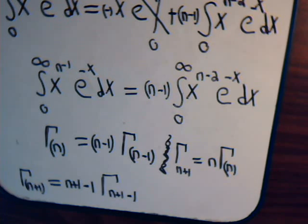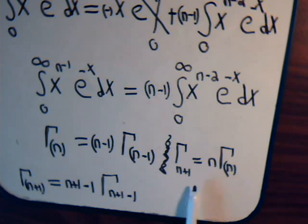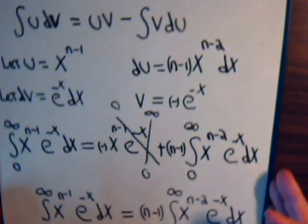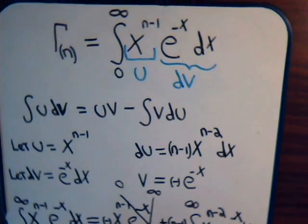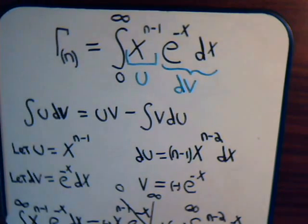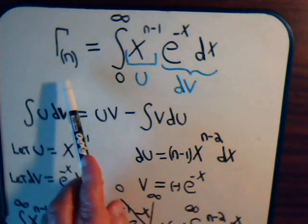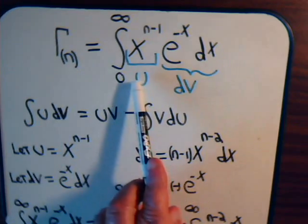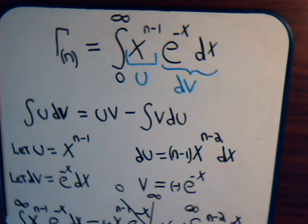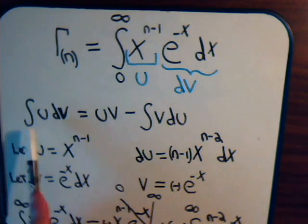It came about very quickly just by considering the basic definition of the gamma function, looking at the integral, and breaking it apart using integration by parts.